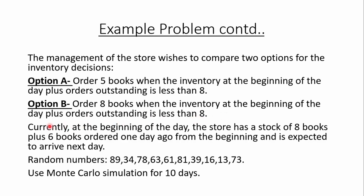Option B is to order 8 books when the inventory at the beginning of the day plus orders outstanding is less than 8 books. Currently at the beginning of day, the store has a stock of 8 books plus 6 books ordered one day ago which are expected to arrive the next day. These are 10 random numbers given in the problem, and we need to use Monte Carlo simulation for 10 days.